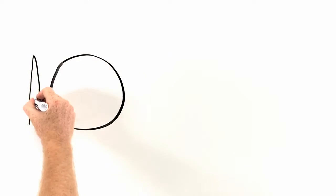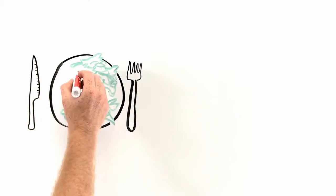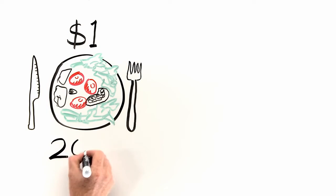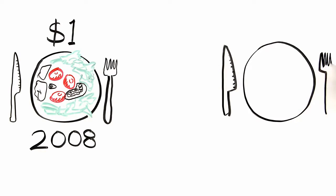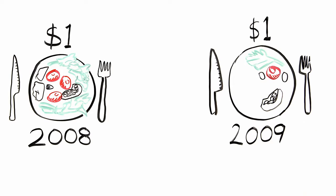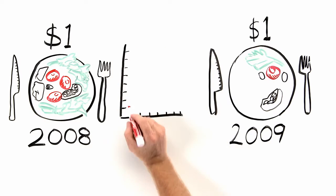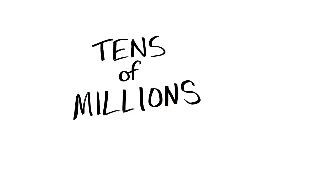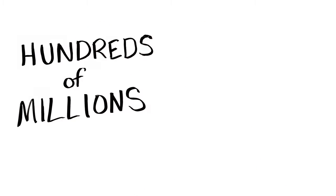To start, let's consider two images. The first shows how much food you could buy for $1 on a market in the African nation of Zambia in 2008. The second shows how much you could buy on the same market for $1 in 2009. What happened in between was skyrocketing food prices, a crisis that has thrown tens, maybe even hundreds of millions, into poverty.